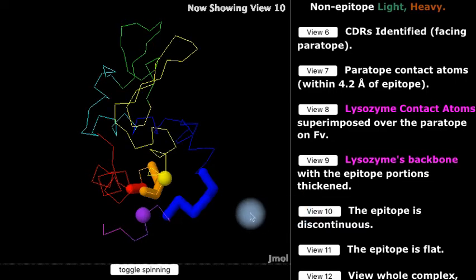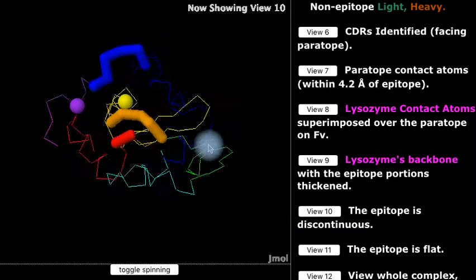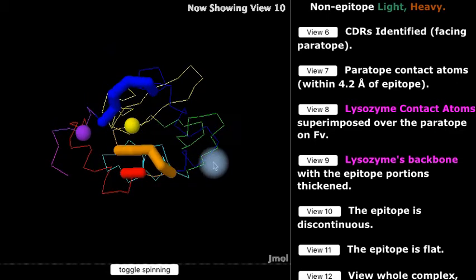The lysozyme epitope is discontinuous. It's made up of five separate segments of the lysozyme polypeptide chain. This is typical of epitopes recognized by antibody, but parenthetically, T-lymphocyte epitopes are usually continuous peptide fragments.